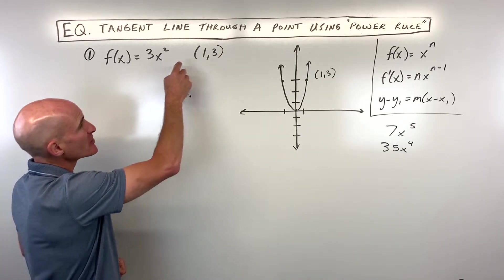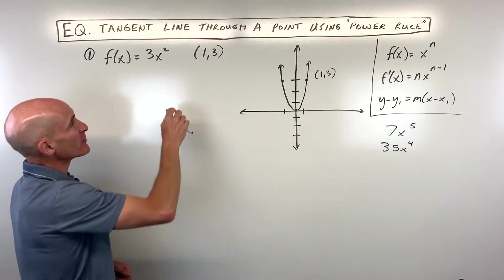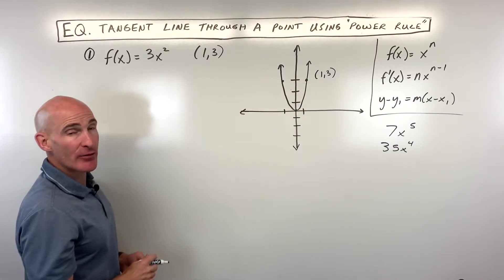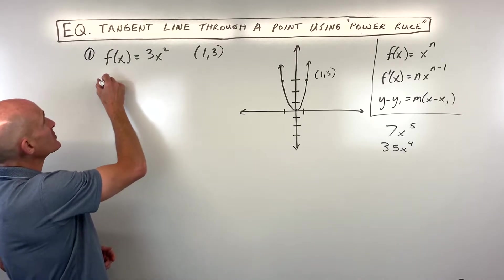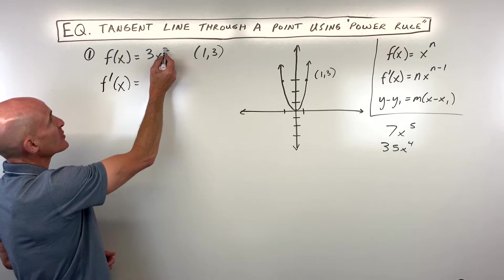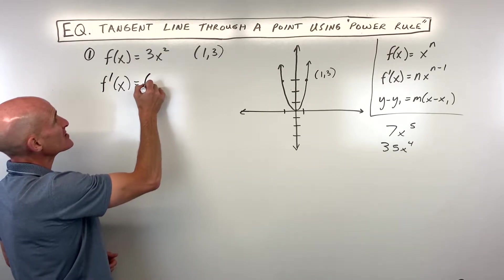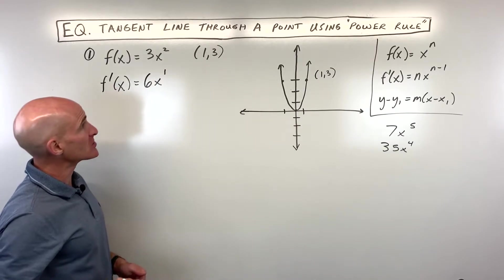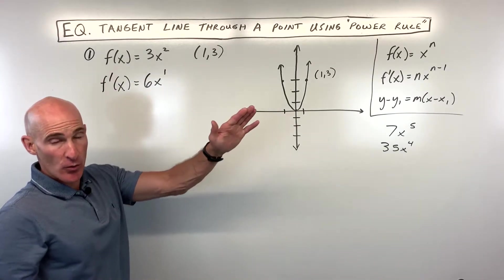We're looking at this parabola, 3x squared. We're going to find the equation of the tangent line through this point (1, 3). First, let's find the derivative. We're going to bring down that 2. 2 times 3 is 6. We're going to subtract 1 from the exponent, so that's 6x to the first. This is a formula for the slope of the tangent line.